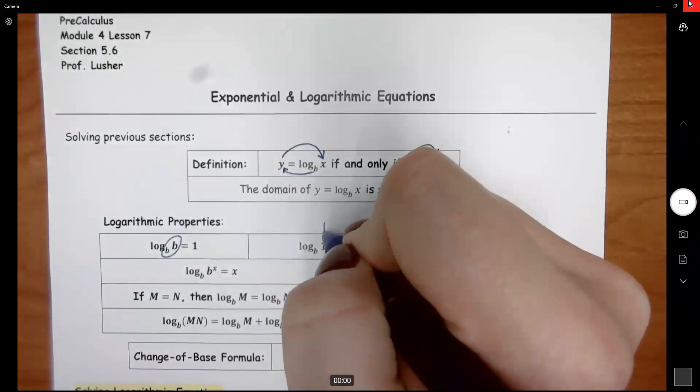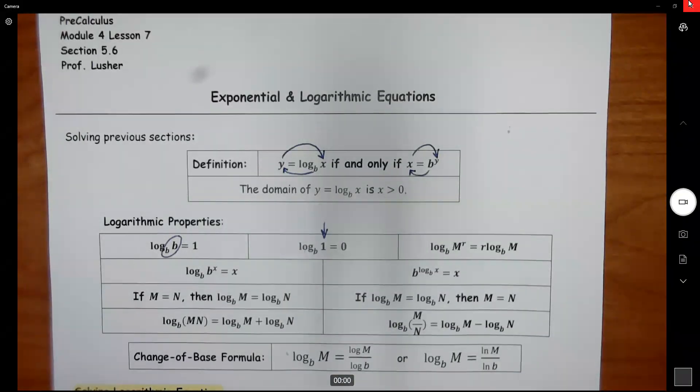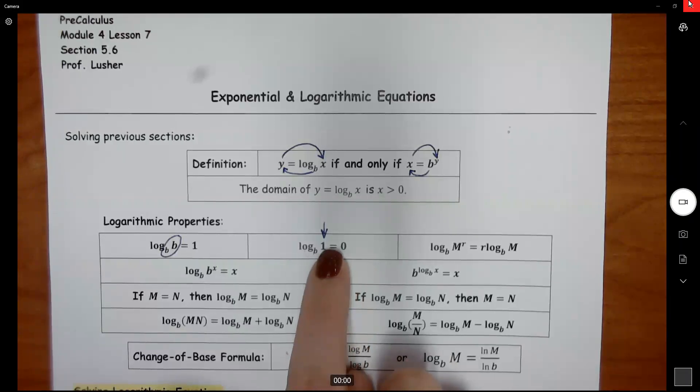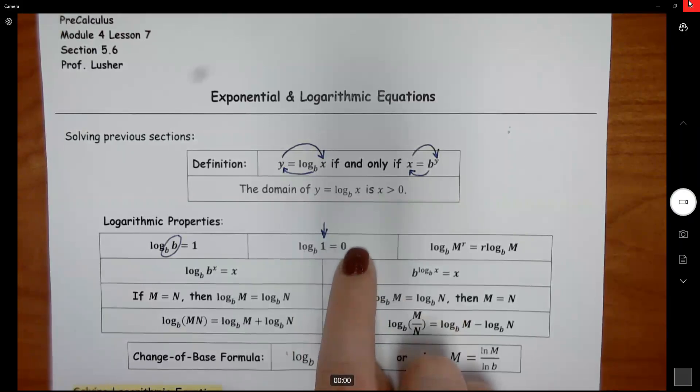If we have a one right here, it's always going to equal zero, because that would be b to the zero power does equal one. The only way you can get an exponent to equal one is if you have like one to a power, or if you have anything to the zero power.